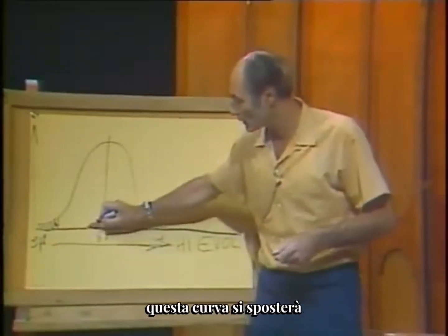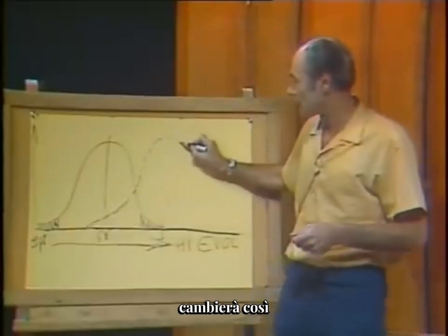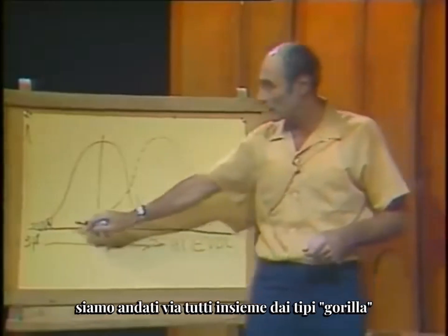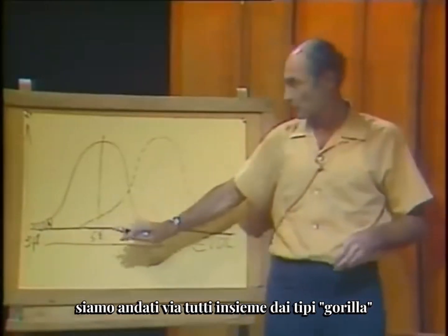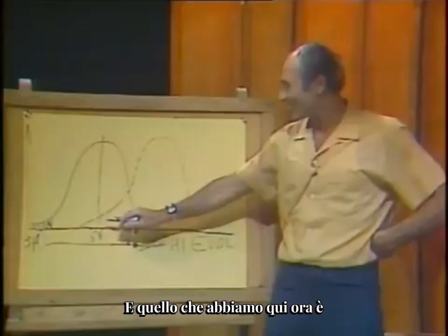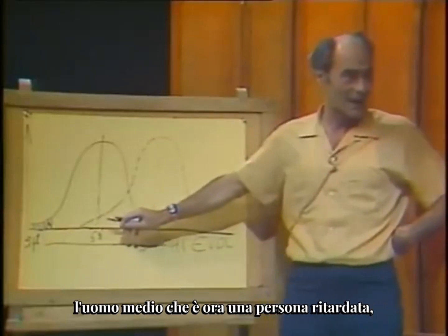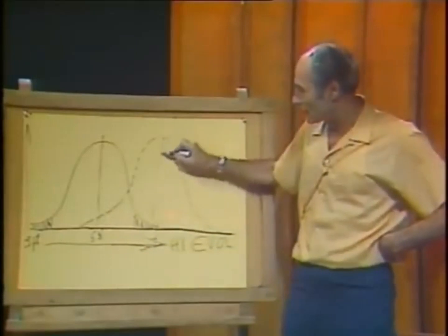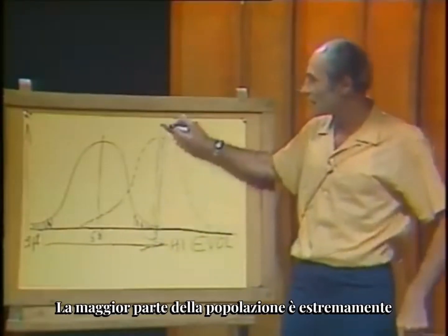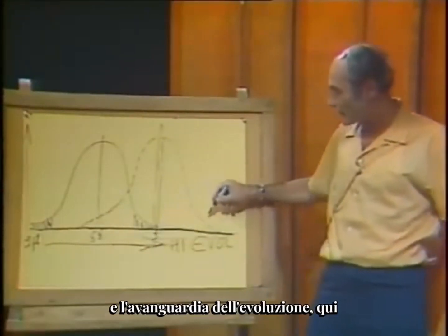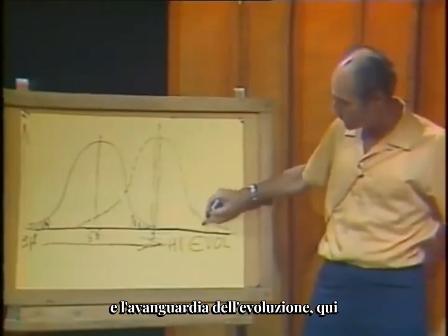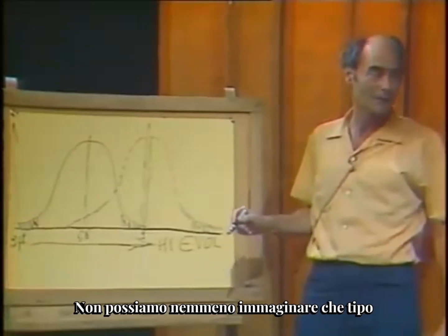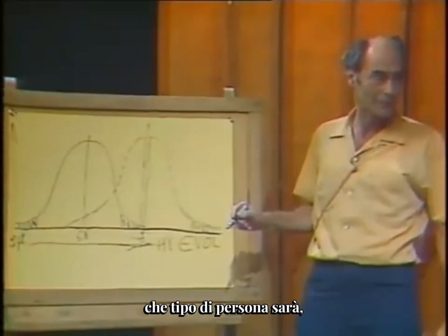This curve is going to shift - the bulk of the population will be very, very highly evolved. We have gone away altogether from the gorilla types, no more gorillas. And what we have here now is that the average man is now the retarded person in evolutionary terms. The bulk of the population is extremely highly evolved, and the cutting edge of evolution here - these are very, very highly evolved people. We can't even imagine what kind of person that will be. He may not have a physical body.